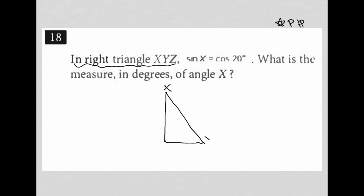Here's my right triangle. Here's my X, here's my Y, here's my Z, and here's my right angle. I'm told that the sine of X — I'm going to label the sides little a, little b, and little c — so the sine of X, based on SOHCAHTOA, is equal to a over c: opposite over hypotenuse.